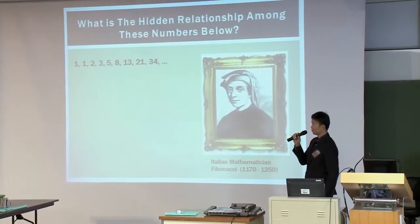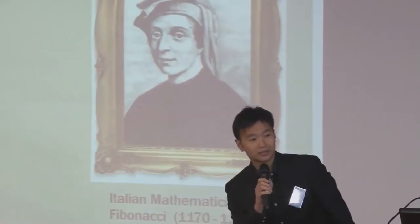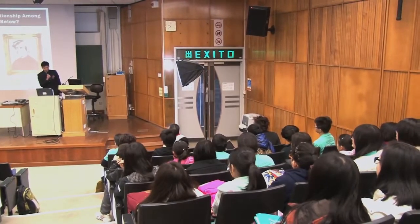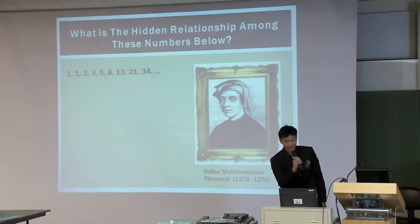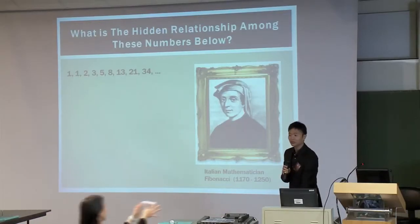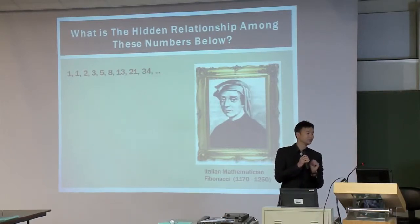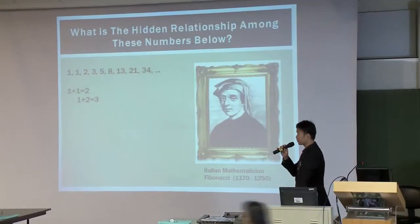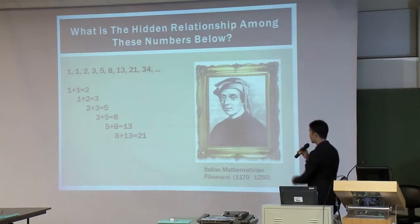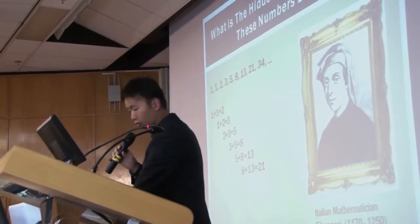Can anyone tell me what's the hidden relationship among these numbers below? When you add two consecutive numbers in this sequence, you get the next number. Let's say you take five and eight — when you add five and eight together, you get 13, which is the next number. Do you guys agree? Yes. We have a gift present and you deserve a well-deserved prize. So that's correct. One plus one equals two, one plus two equals three, and so on. You keep adding the two numbers together, you get the next. This particular sequence was discovered by a mathematician — Fibonacci. That's why we call these Fibonacci numbers.